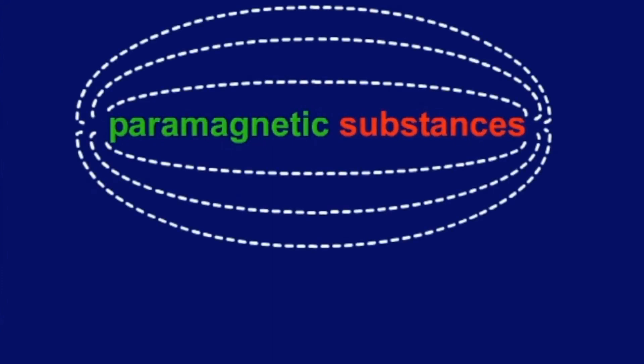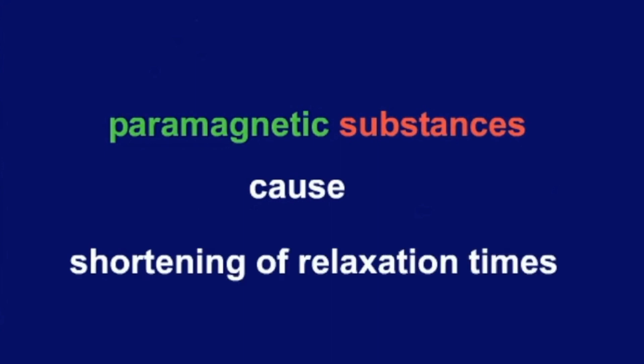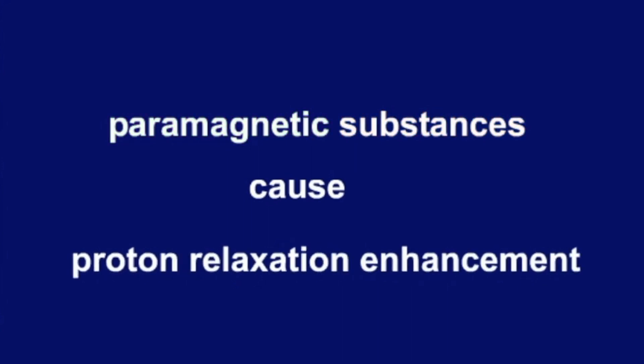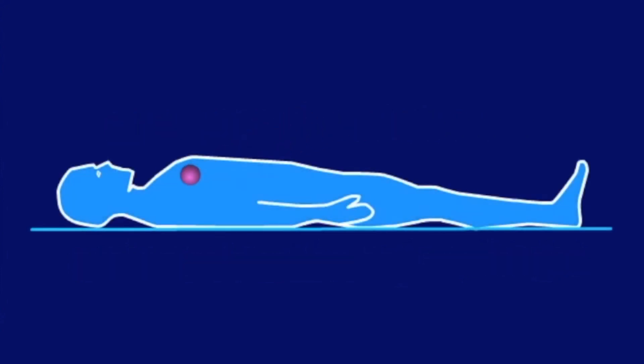Certain so-called paramagnetic substances have small local magnetic fields which cause a shortening of the relaxation times of the surrounding protons. This effect is named proton relaxation enhancement. The body contains paramagnetic substances under normal circumstances.